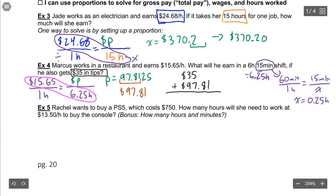This last example really highlights why the proportion method is so powerful. Rachel wants to buy a PS5 which costs $750. How many hours will she need to work at $13.50 per hour to buy the console? If you're used to using the unit rate method where you just multiply your unit rate by your hours, that doesn't really work for this question. But if you set up your proportion the same every single time, you can actually use the exact same method we use in every single question so far.